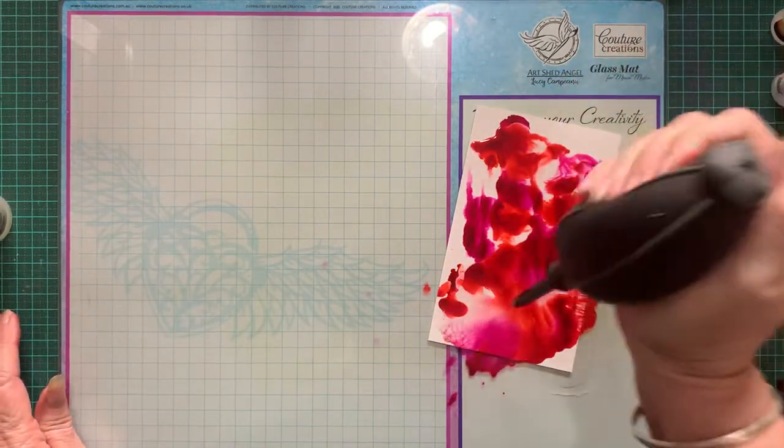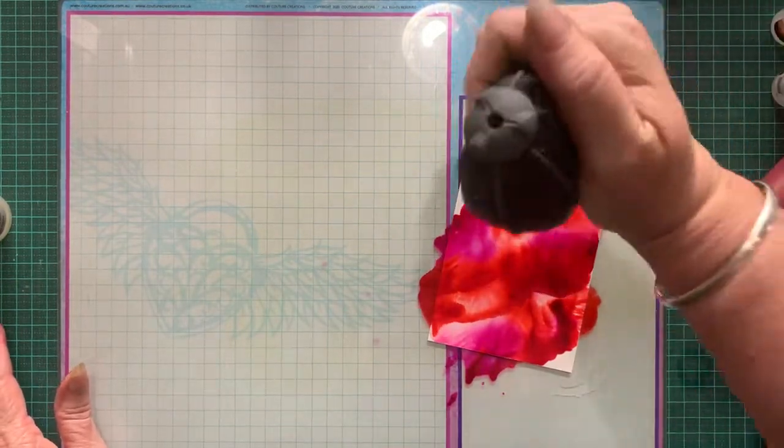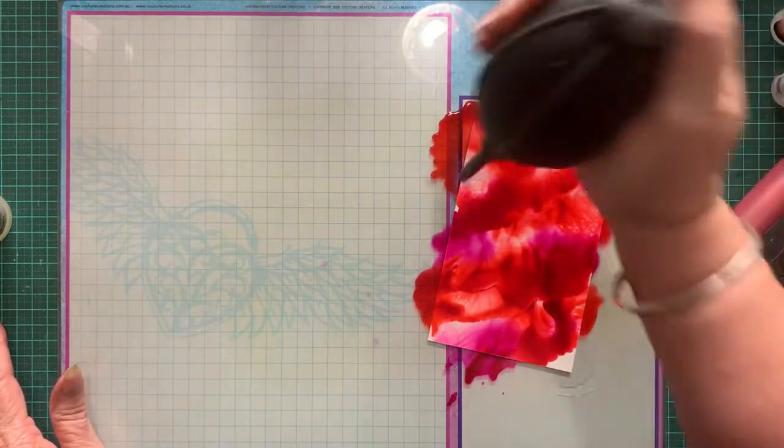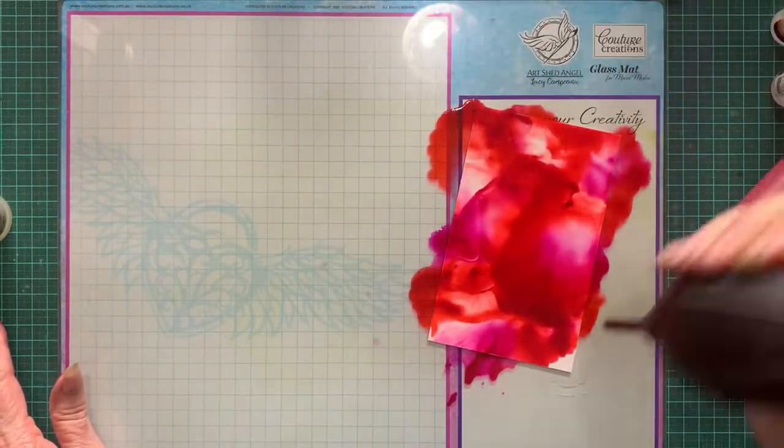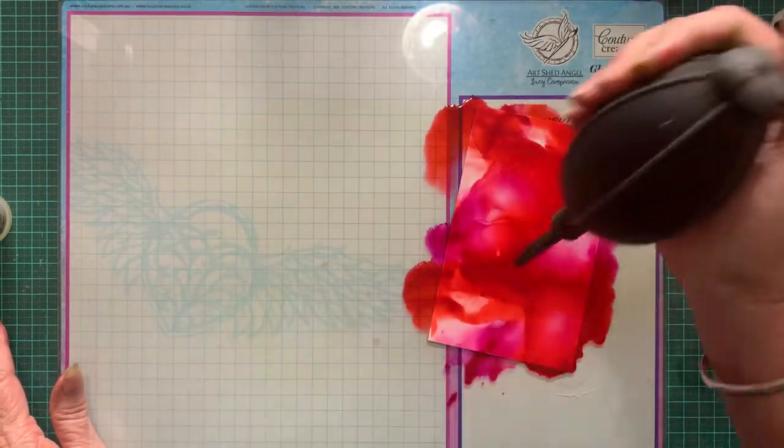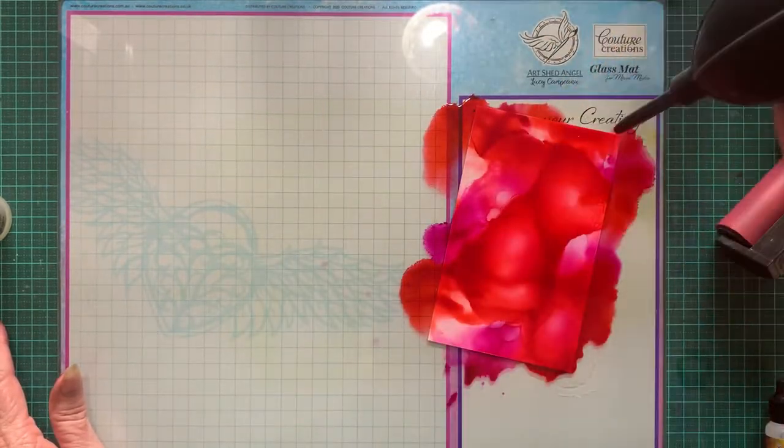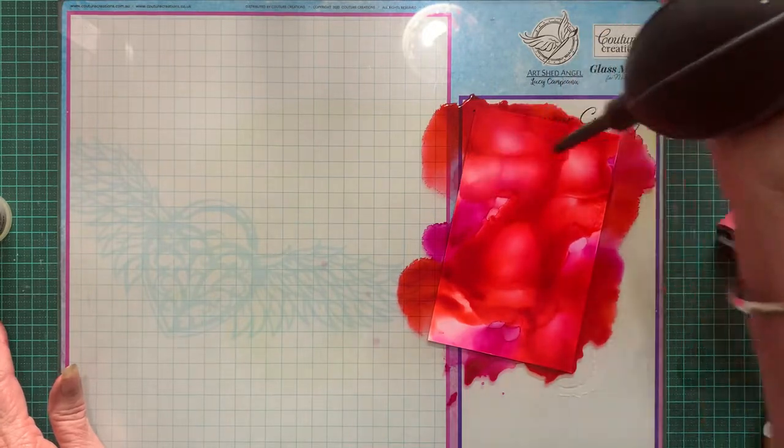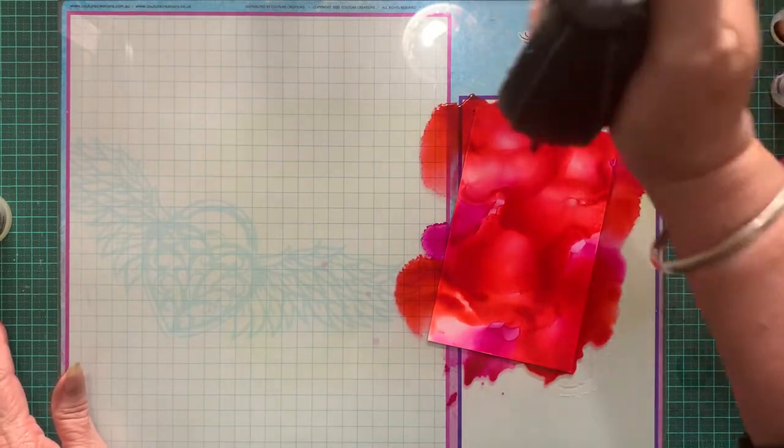And then we'll move it around. Obviously the more blending solution you use, the more it will move. If you don't want a lot of movement, only put a little bit of solution. If you want a lot of movement, add a lot of solution. Now do not try and dry this with a heat gun or anything because it will just melt the yupo paper.